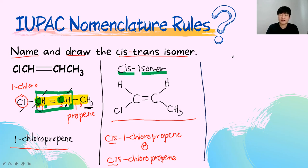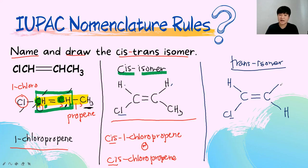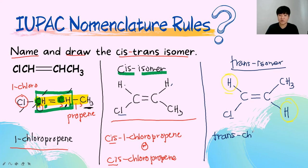For the trans-isomer: keep the trigonal planar shape for C=C. Trans means hydrogen must be at opposite directions — one hydrogen at the top and one at the bottom. The Cl remains on the left carbon. Switch the hydrogen and CH3 on the right carbon so CH3 goes to top and H goes to bottom. The name is trans-chloropropene. Always use a dash after 'cis' or 'trans'.